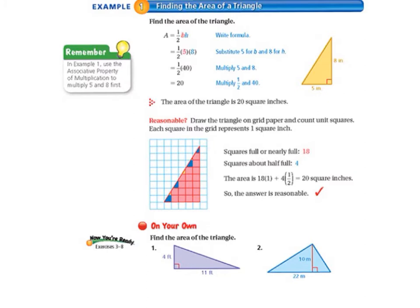A equals one-half B times H. Looking at our triangle, our base B equals 5 inches and our height H equals 8 inches. We substitute 5 for B and 8 for H, so 5 times 8. And 5 times 8 equals 40, so the area of the triangle is 20 square inches.